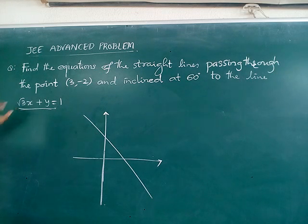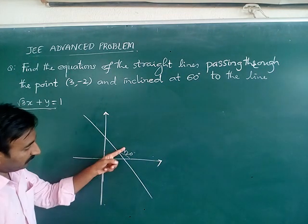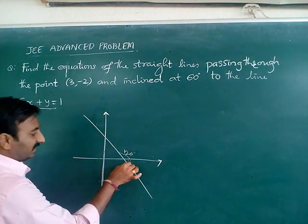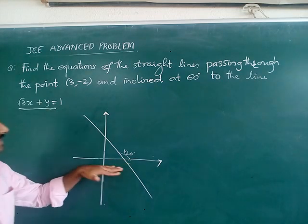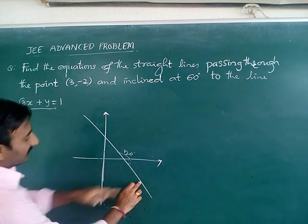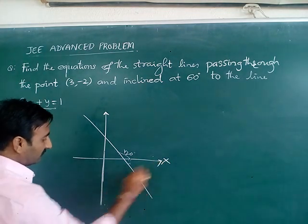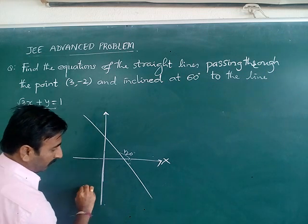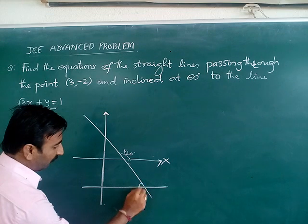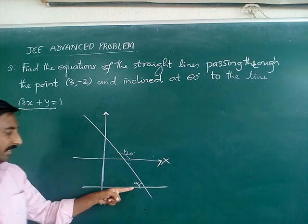Here the slope is minus root 3. Obviously this angle goes 120 degrees. If it is 120, this angle gives 60 degrees. If it is 60 degrees, then the line which is making angle 60 degrees with this one, obviously it is parallel to the x-axis. One of the lines which makes an angle alpha with this straight line is obviously 60 degrees.